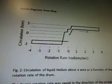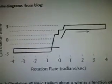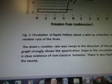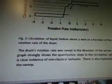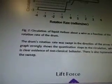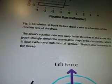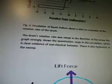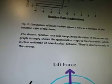I'm going to quote diagrams from the blog. This is circulation rotation rate. The circulation of liquid helium about a wire as a function of the rotation rate of the drum. The drum's rotation rate was swept in the direction of the arrow, with the graph strongly showing the quantization steps in the circulation, which is clearly evidence of non-classical behavior.